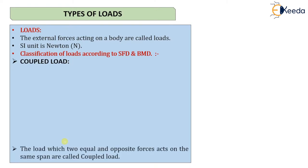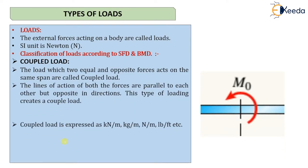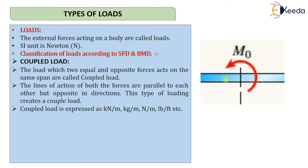Then we have couple load — also known as a moment. Two equal and opposite forces acting on the same span, with their lines of action parallel to each other, are known as a coupled load. The unit of a couple is kN·m, kg·m, or N·m depending on the system used.